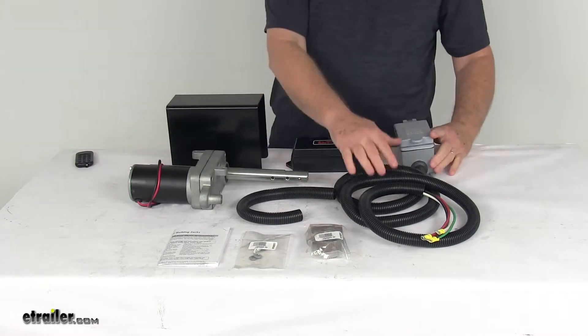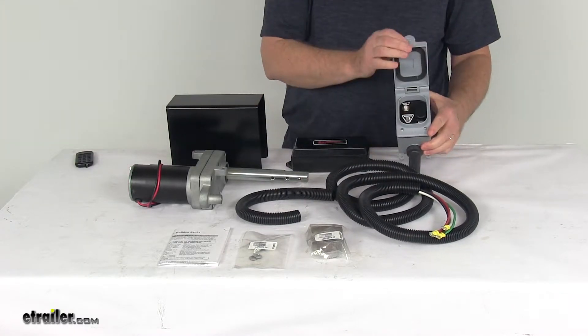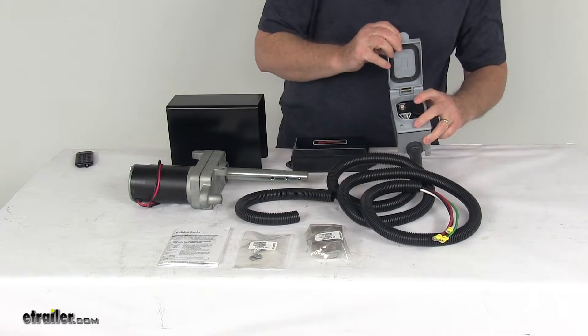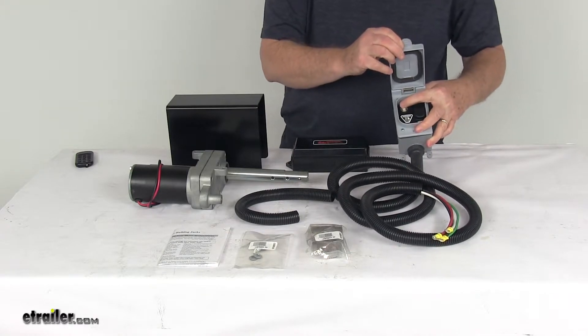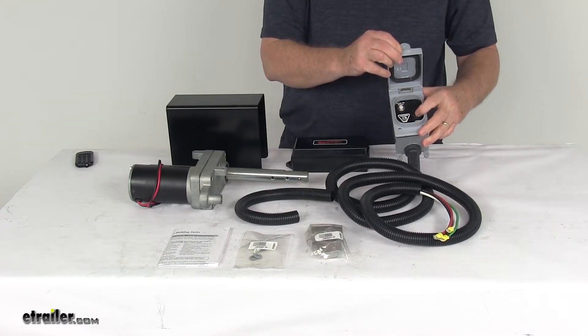It comes with this custom-designed wiring harness and the rocker switch in this nice weatherproof box. It includes the 25-amp circuit breaker with the push-button reset. There's your rocker switch right there.